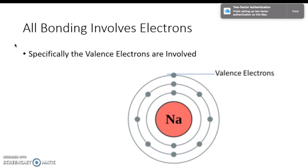Valence electrons are the specific type of electrons involved in bonding. Valence electrons are the outermost shell of electrons. They're the most easily accessible, which is why they're the ones involved.